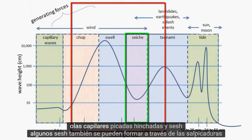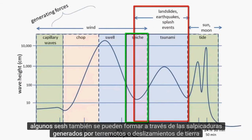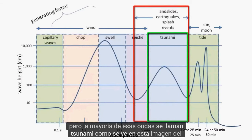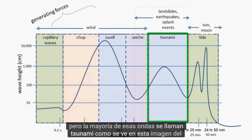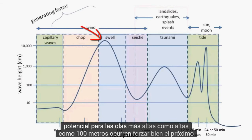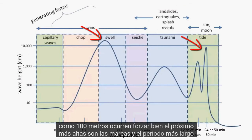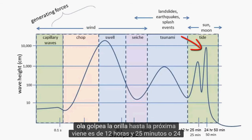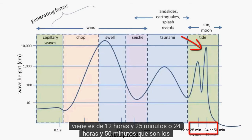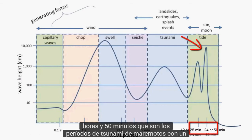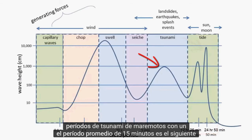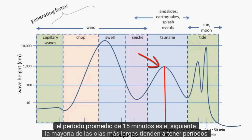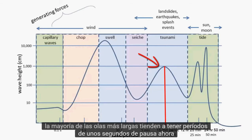Some seiche can also form through splashes generated by earthquakes or landslides, but most of those waves are called tsunami. As you see from this image, the potential for the tallest waves — as high as 100 meters — occurs for swell. The next highest are tides. The longest period — the longest we have to wait after one wave has hit the shore until the next one comes — is 12 hours and 25 minutes or 24 hours and 50 minutes, which are the periods of tidal waves. Tsunami, with an average period of 15 minutes, is the next longest. Most waves tend to have periods of a few seconds.